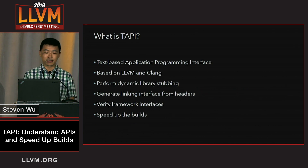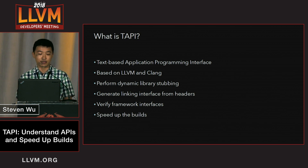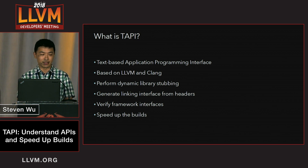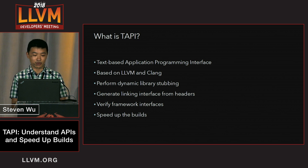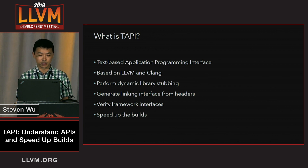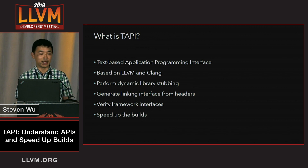First of all, what is TAPI? TAPI stands for Text-Based Application Program Interface. It's a tool we wrote based on LLVM and Clang. It can perform simple tasks like dynamic library stubbing, and it can also do something more advanced like generate linker interface directly from the headers. We used this tool to ensure the quality of our frameworks by verifying their APIs, and we also used this tool to speed up our builds.